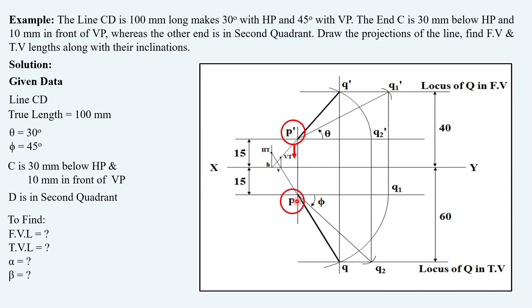So you have to keep this top view point below XY as stated here in this solution. The only change is you have to take the phi angle upwards so the top view locus of the other end of the line will be above XY.